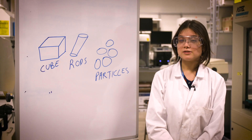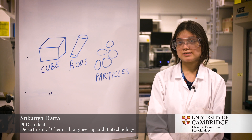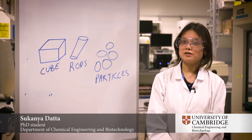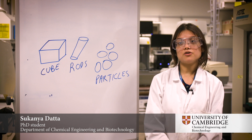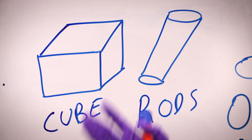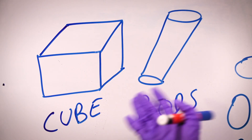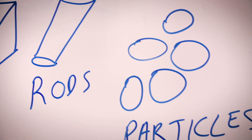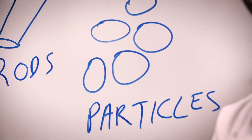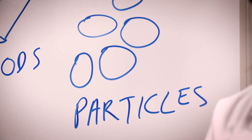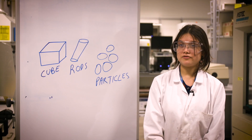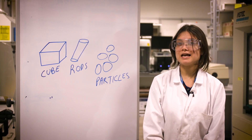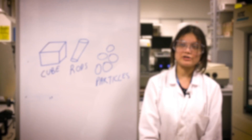We are also making different morphologies of nanostructured materials. The different kinds of morphologies our group is working on include cubes, nanorods, and nanoparticles. We are using a range of different chemical reagents like deep eutectic solvents to control the exposure of the facets and to make sure that the energetically active facets are being exposed in reaction.